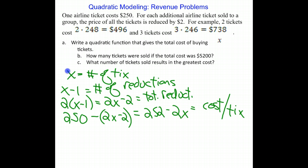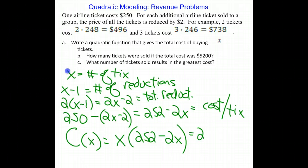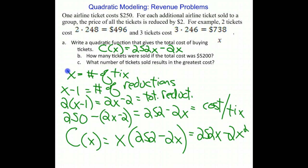So for the group, which is buying X tickets, the cost function C(X) will equal the number of tickets times the cost of each individual ticket. This comes out to be 252X - 2X². I'm just going to put that up here. C(X) = 252X - 2X².